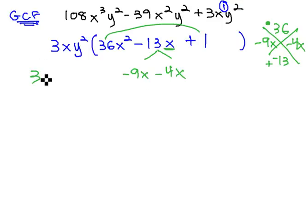The rest of the problem is still the same, 3xy² times 36x² minus 9x minus 4x plus 1.